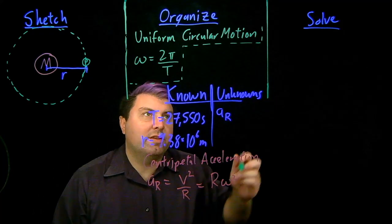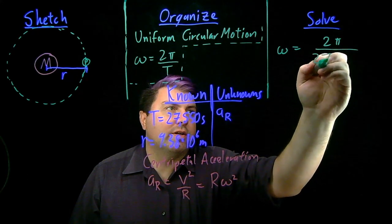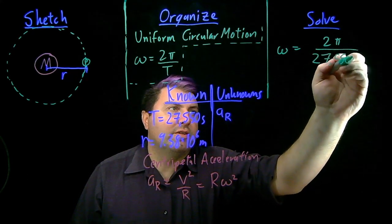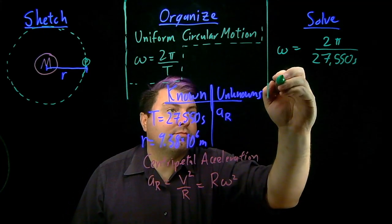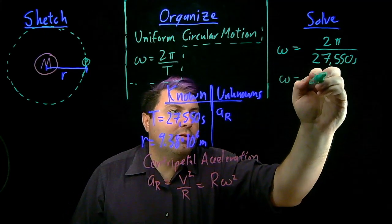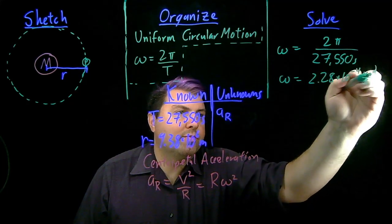So we're going to start there. We have omega is equal to 2 pi divided by 27,550 seconds. And that gives us an omega of 2.28 times 10 to the negative 4 radians per second.